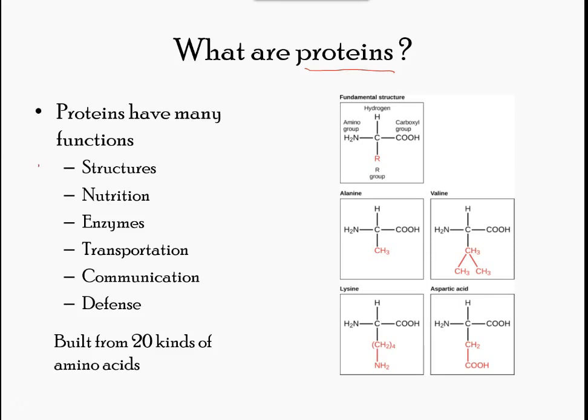Their structures, like their functions, vary greatly — including structural, nutritional, enzymatic, transportation, and communication roles. They are all, however, polymers of amino acids arranged in a linear sequence. The functions of proteins are very diverse because there are 20 different chemically distinct amino acids that can form long chains in any order.